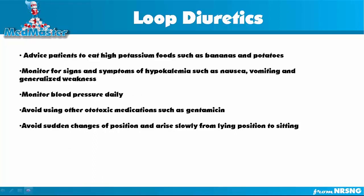For patient education and nursing considerations: tell the patient to eat high-potassium foods such as bananas and potatoes because the medication causes hypokalemia. Monitor for signs and symptoms of hypokalemia such as nausea, vomiting, and generalized weakness. Tell the patient to monitor their blood pressure daily. Avoid using other ototoxic medications such as gentamicin. Since this medication can cause hypotension, educate the patient to avoid sudden position changes — they should rise slowly from lying to sitting to avoid dizziness.